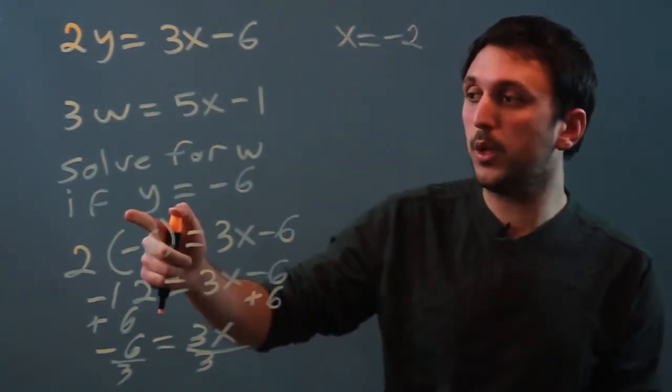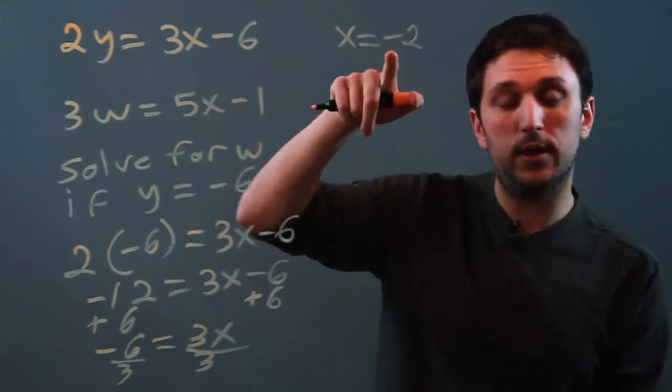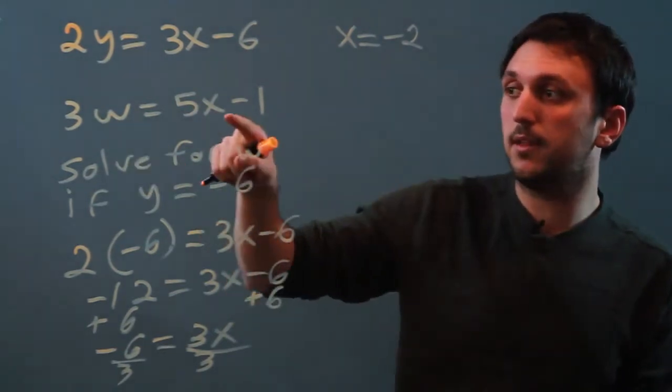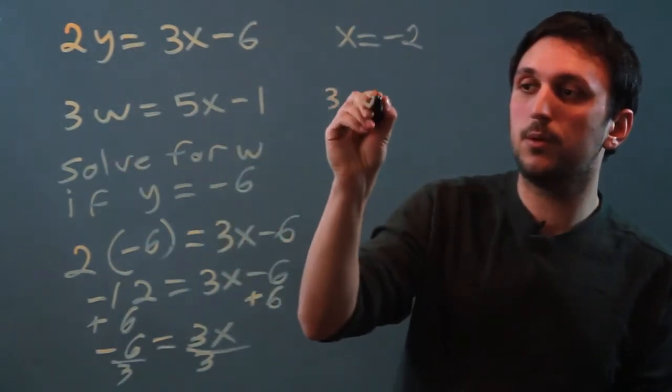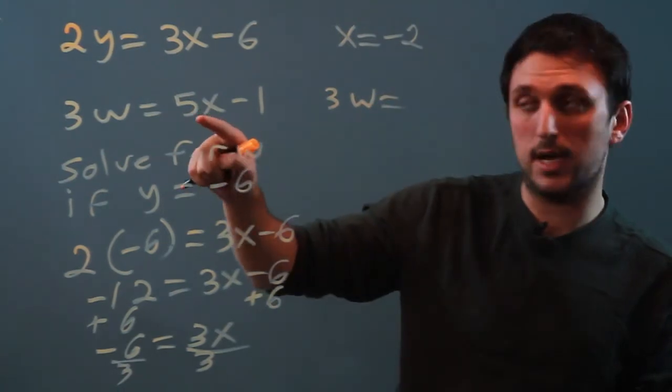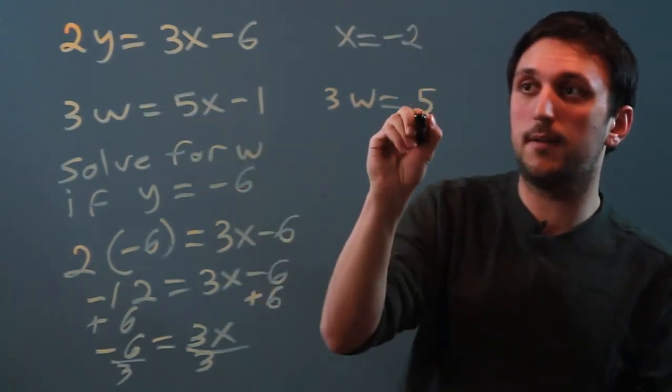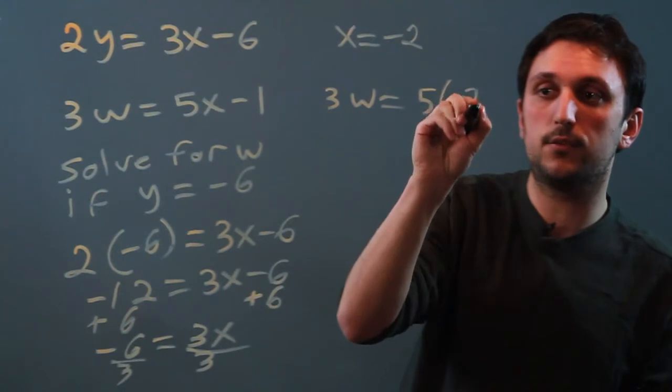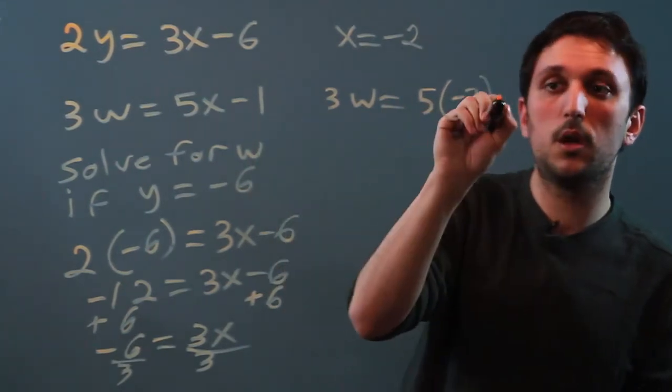So now we have x, but we want w, and again we have another negative number. So let's take this equation. 3w equals, now it says 5x, but we're going to call that 5 times negative 2, as we substitute, minus 1.